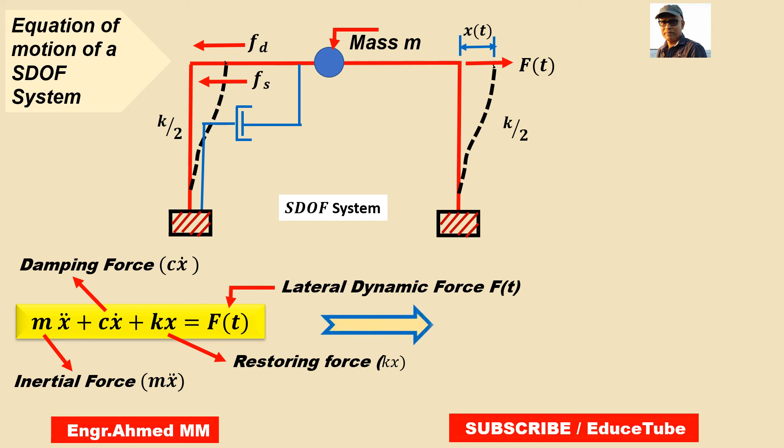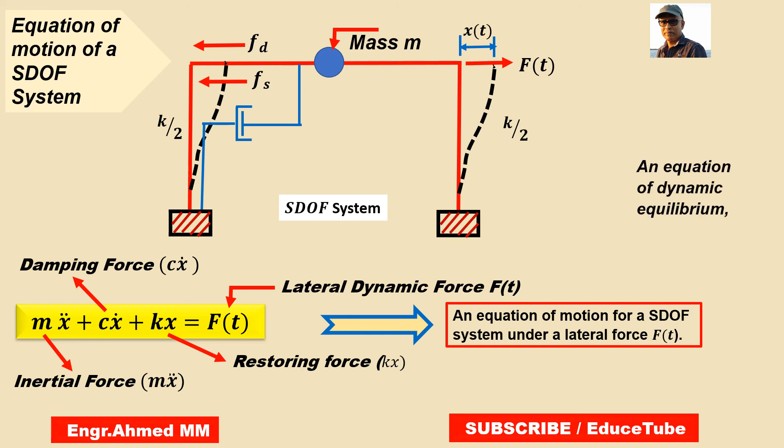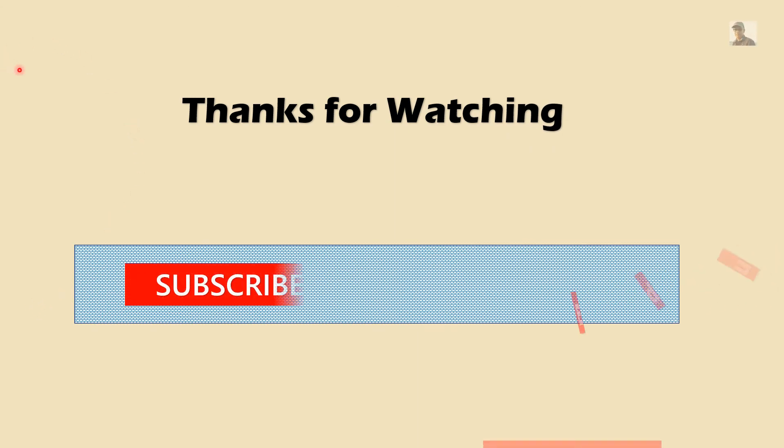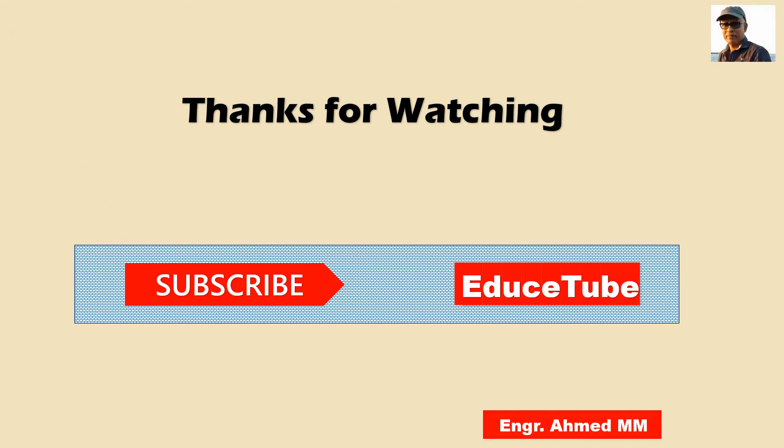So totally we can say it is an equation of motion for a single degree of freedom system under a lateral load Ft. It is an equation of dynamic equilibrium. I think we are done for the equation of motion for a single degree of freedom system under lateral load Ft.